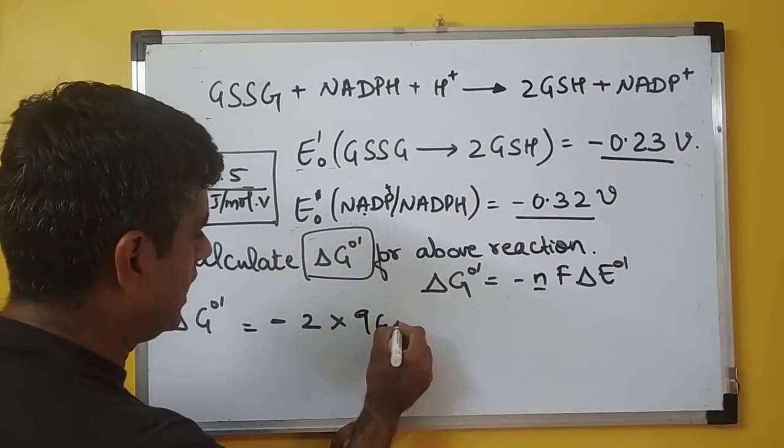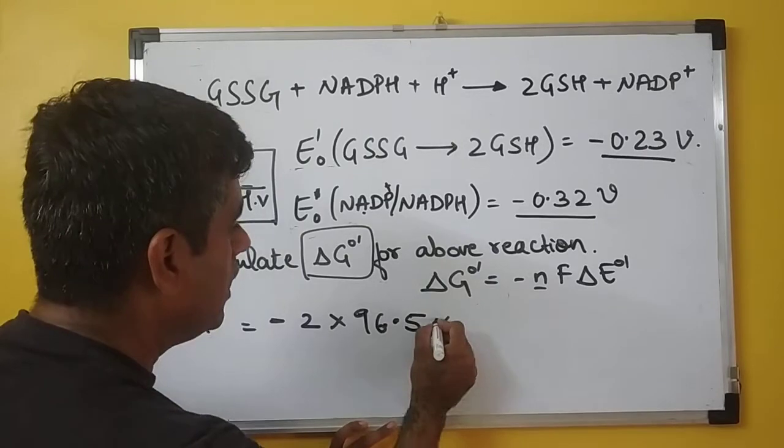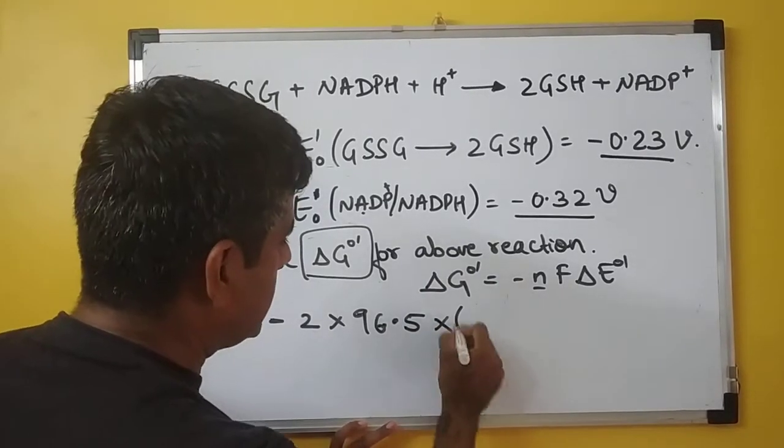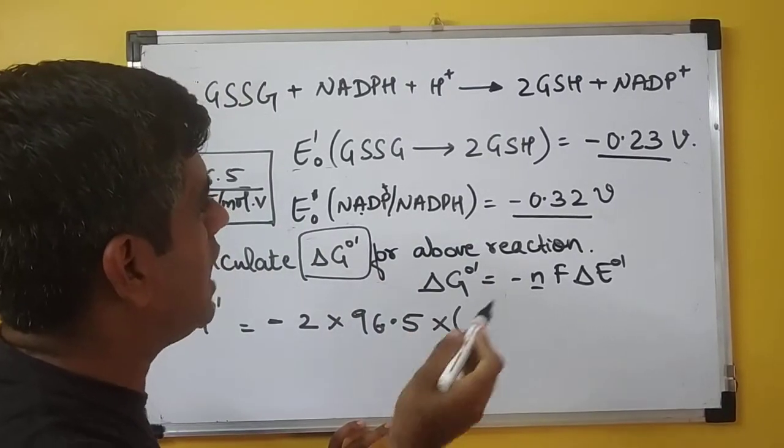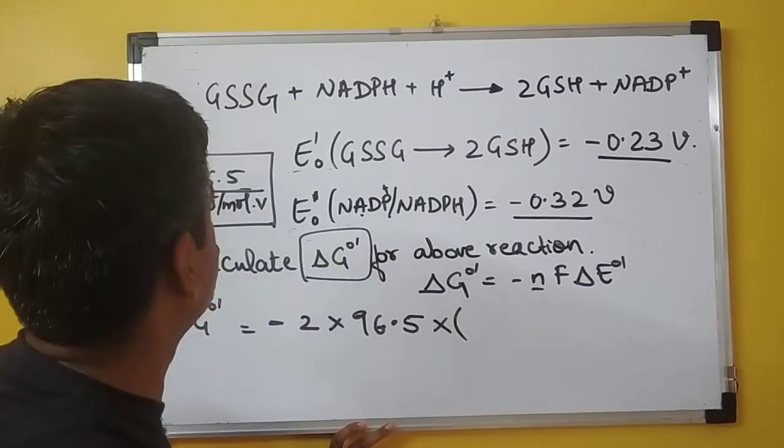So this I take as 96.5 times ΔE₀'. ΔE₀' is the difference between the E₀' values of the acceptor minus that of the donor.